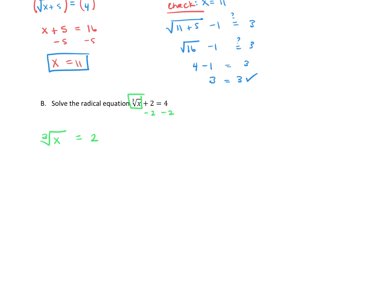To cancel out the cube root, we will do the opposite operation. We're going to raise this to the third power, raise that to the third power. So the cube root of x cubed leaves us with just x equals, and then two to the third power is eight. So we got x equals eight.